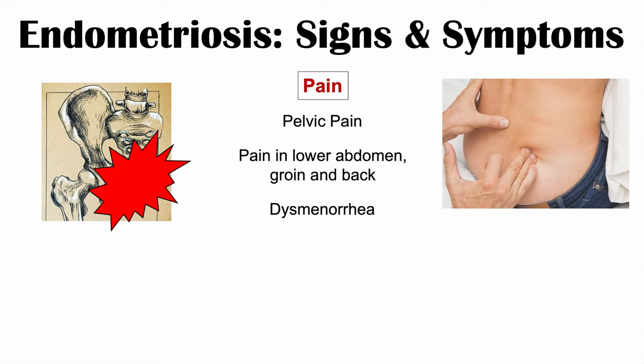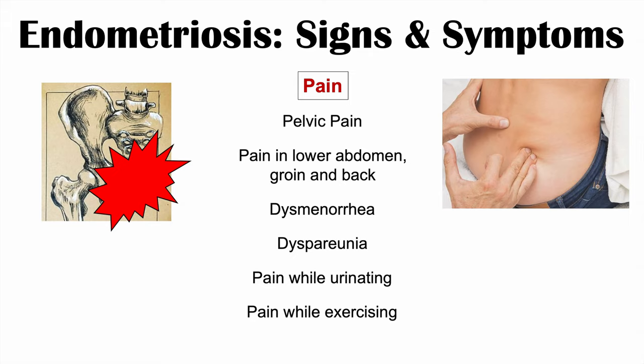Patients can also experience dysmenorrhea — very painful menstrual cramping. If the pain is very severe or worsens each menstrual cycle over time, this can indicate endometriosis. There is also dyspareunia, meaning pain during intercourse, as well as pain while urinating and pain while exercising. So there are many areas where pain can affect an individual: pelvic pain, pain in the lower abdomen, groin and back, dysmenorrhea, dyspareunia, pain while urinating, and pain while exercising.